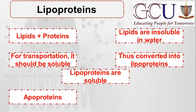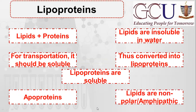The protein part that associates with lipids is called apoprotein. Lipids can be of two types: either totally non-polar, such as steroids, or amphipathic — having both hydrophilic and hydrophobic parts, such as phospholipids, which contain both hydrophilic and hydrophobic regions.